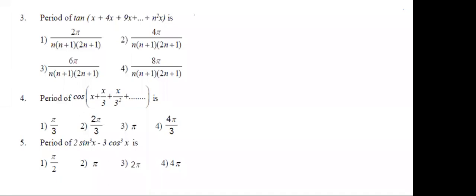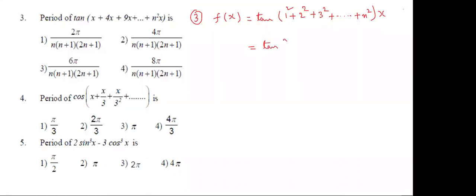Students, see the third question. F(x) is given as tan of (x + 4x + 9x + ...). Take x common — the remaining terms are 1 plus 4 (which is 2²) plus 9 (which is 3²) and so on, with the last term n². This is the sum of squares of n natural numbers, sigma n². The formula is n(n+1)(2n+1) by 6, and A equals n(n+1)(2n+1) by 6.